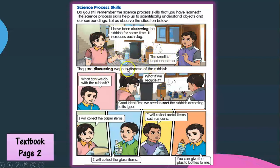Okay, next they are discussing ways to dispose of rubbish. How we are going to dispose the rubbish? Yes, it can be recycling. Okay, we can do recycling. So let's look at what they are discussing. What can we do with the rubbish? What if we recycle it? Good idea. First, we need to sort the rubbish according to its type.